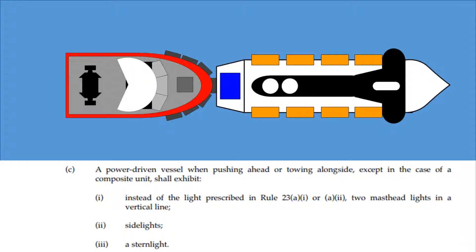A power-driven vessel when pushing ahead or towing alongside, except in the case of a composite unit, shall exhibit, instead of the light prescribed in Rule 23A Part 1 or A Part 2, two masthead lights in a vertical line, sidelights, and a stern light.